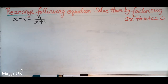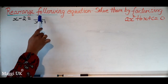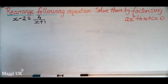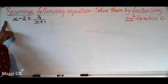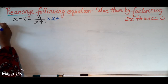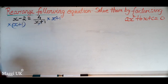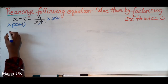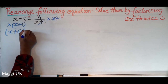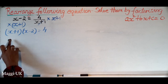This next one is a little bit different but uses the same approach. On the other side we have 4 divided by (x+1). We need to bring (x+1) to the left hand side by multiplying both sides by (x+1), so those cancel. We then have (x+1)(x minus 2) equals 4.